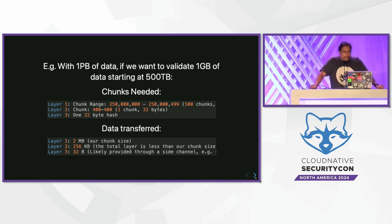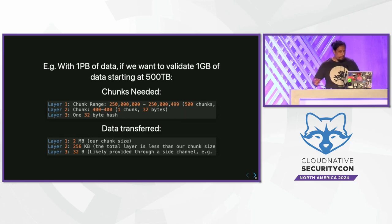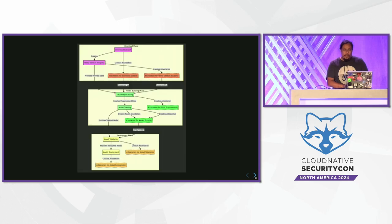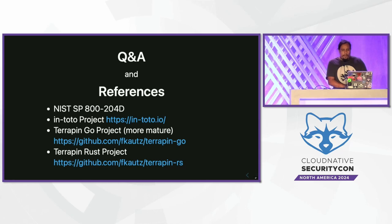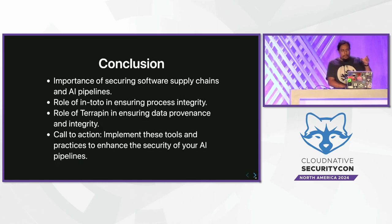Future work on Terrapin includes creating a FUSE plugin and integrating with PyTorch so this can be done quickly and efficiently. This gives us a single 32-byte value that we can inject into our SBOM to validate. Bringing it back to attestations: when we download something in the download phase, we want these attestations to be fast and efficient. This is also embarrassingly parallel — you can throw multiple computers at it, making it incredibly fast with additional computational power.